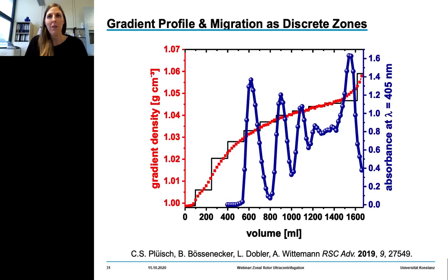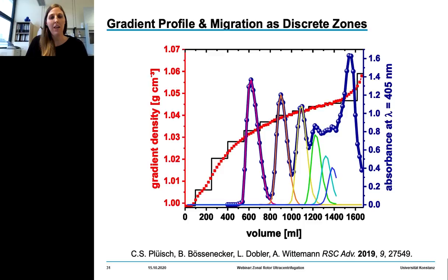We can overlay the density gradient profile and the absorption pattern to map the zones of banded particles. Here we have the monomers, the dimers, trimers, and tetramers. All larger species accumulate near the rotor wall, as we are mainly interested in obtaining larger yields of dimers and trimers in this case.